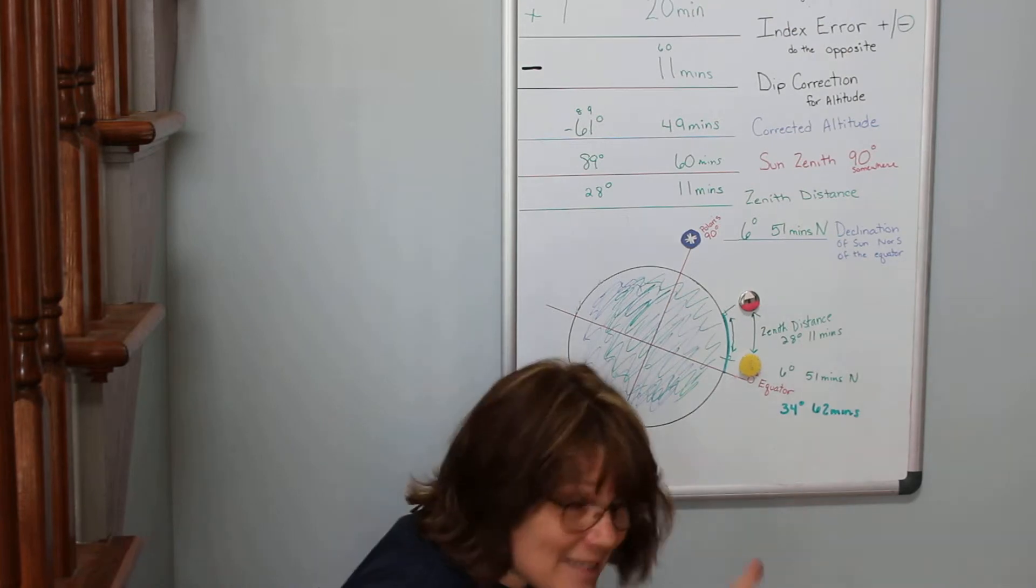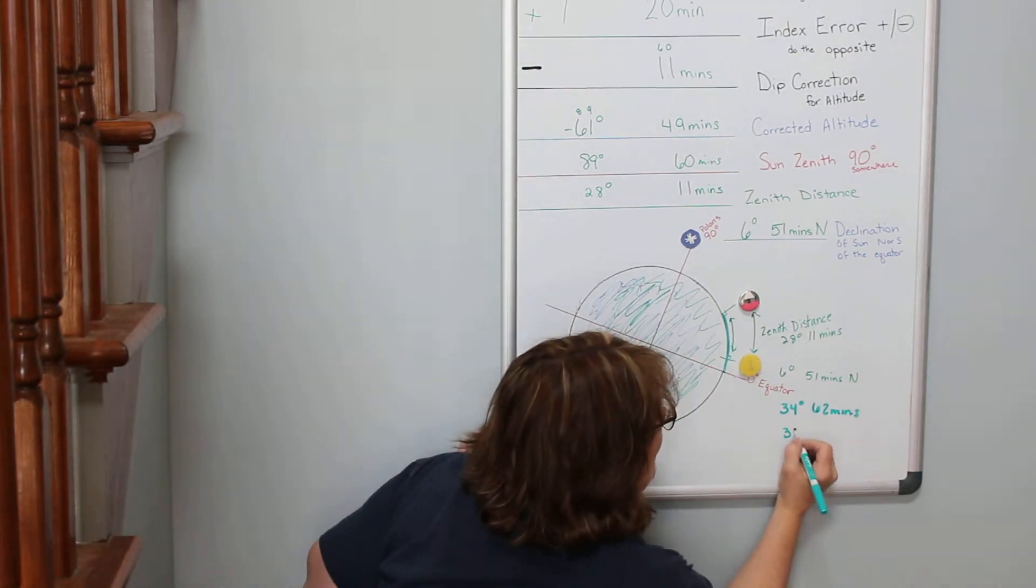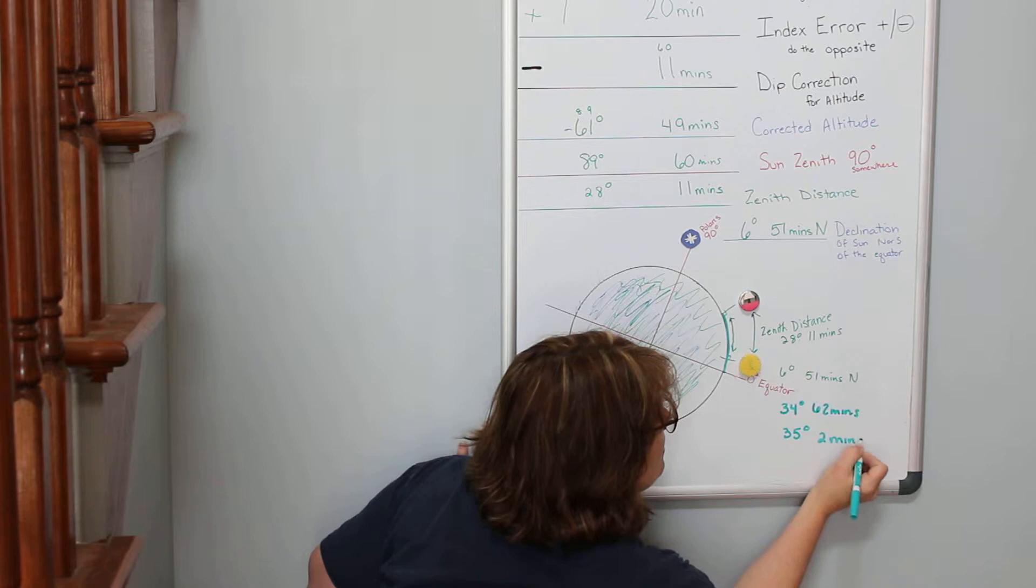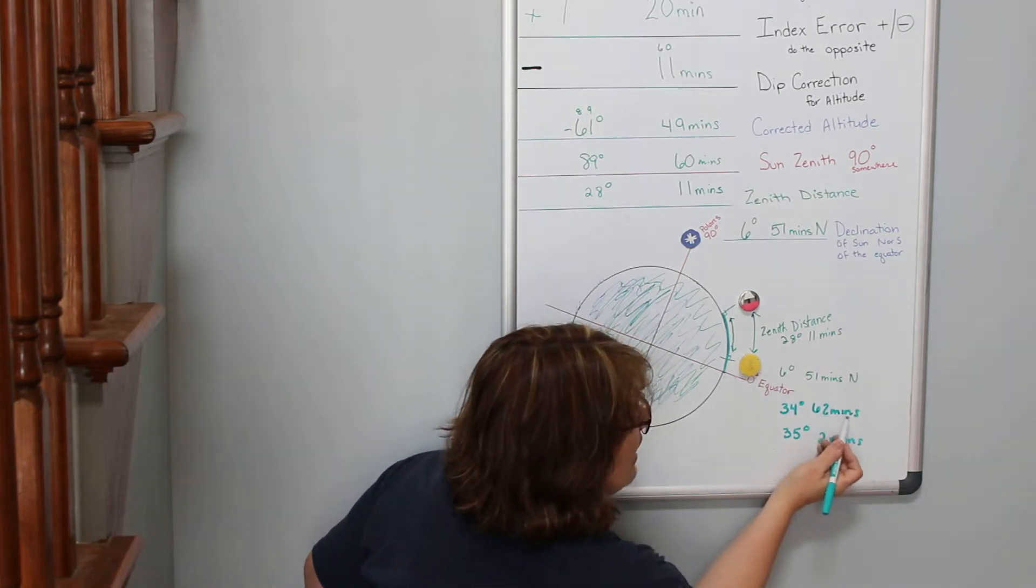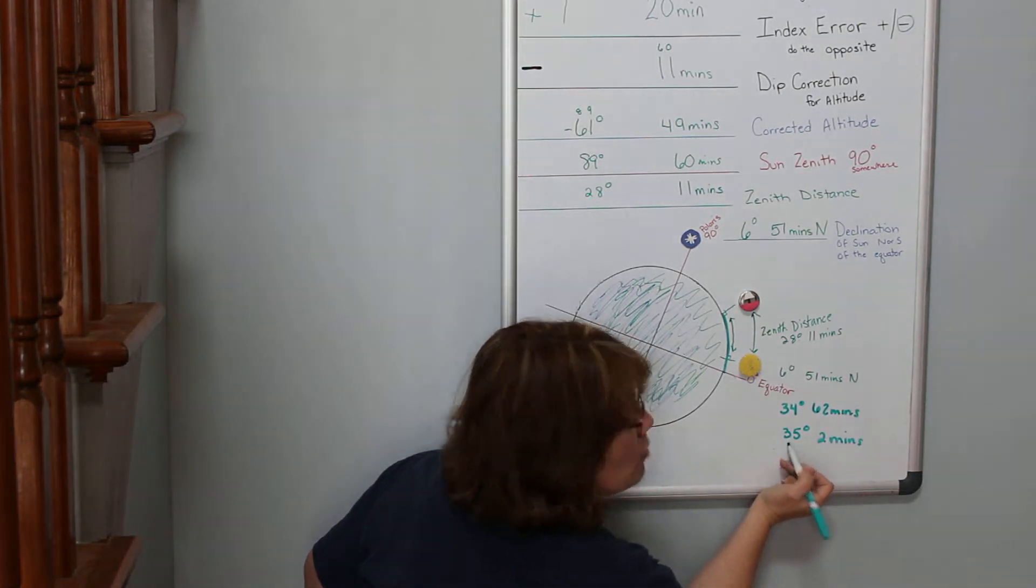And we don't like to go over 62 minutes, so we're going to go 35 degrees and 2 minutes. See, I took my 60 minutes out of that hour and was left with 2 minutes, and I made one more degree.